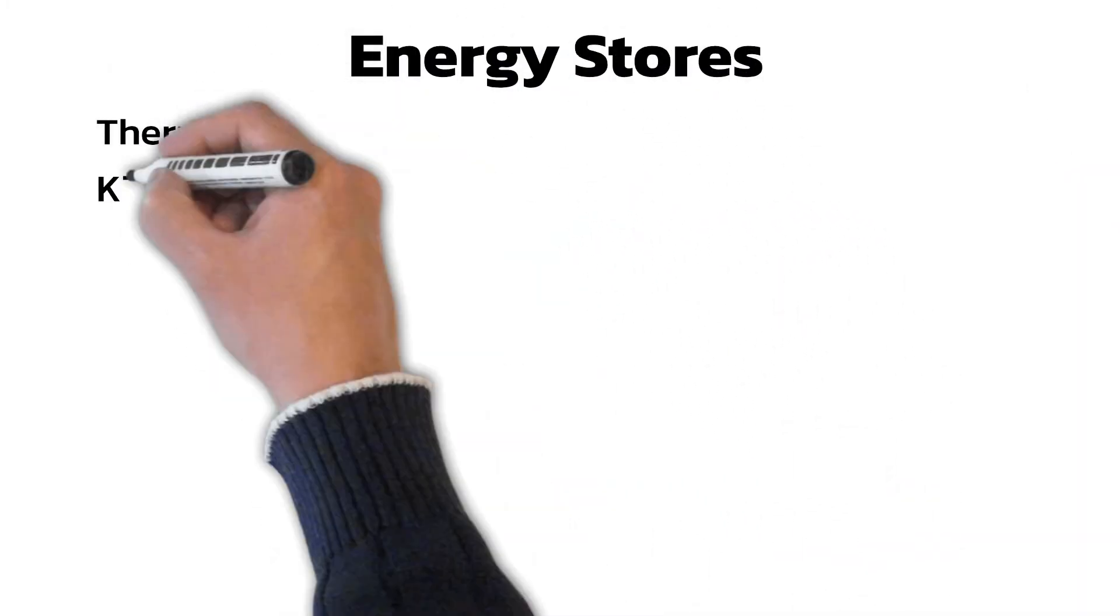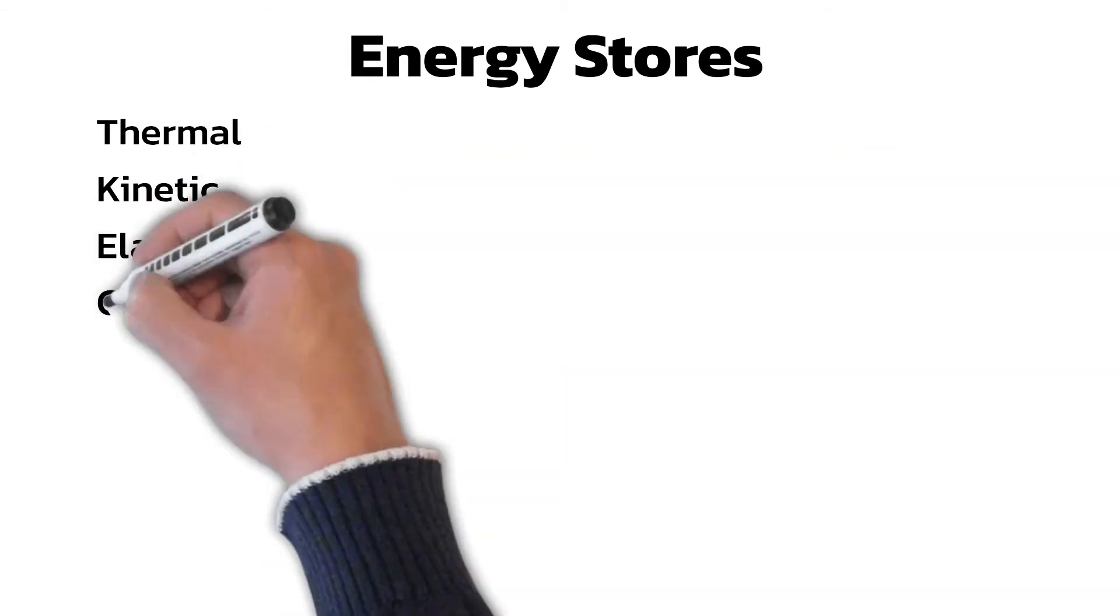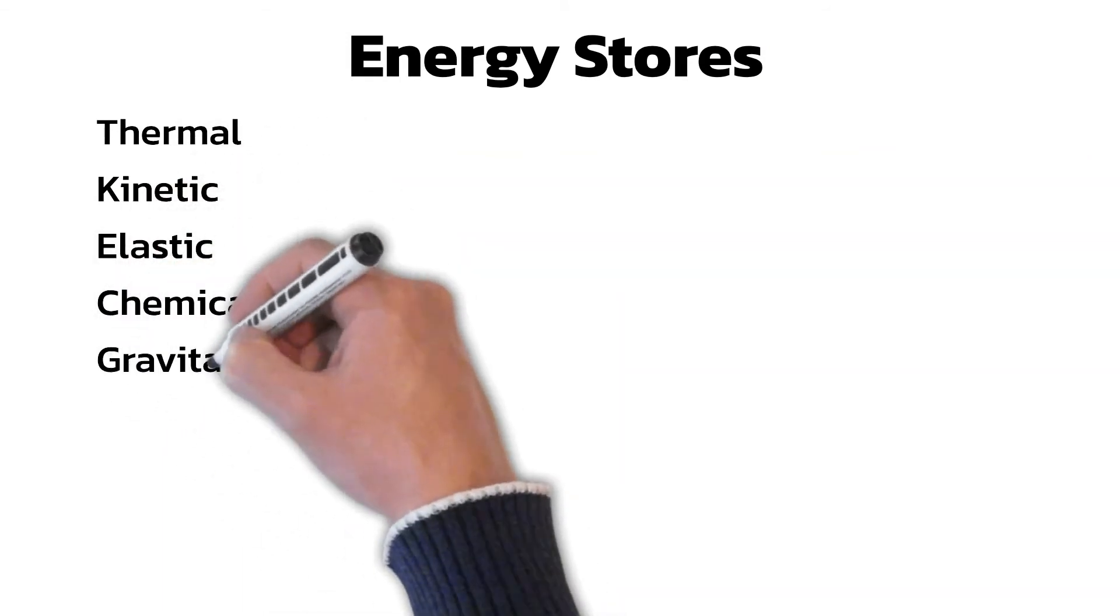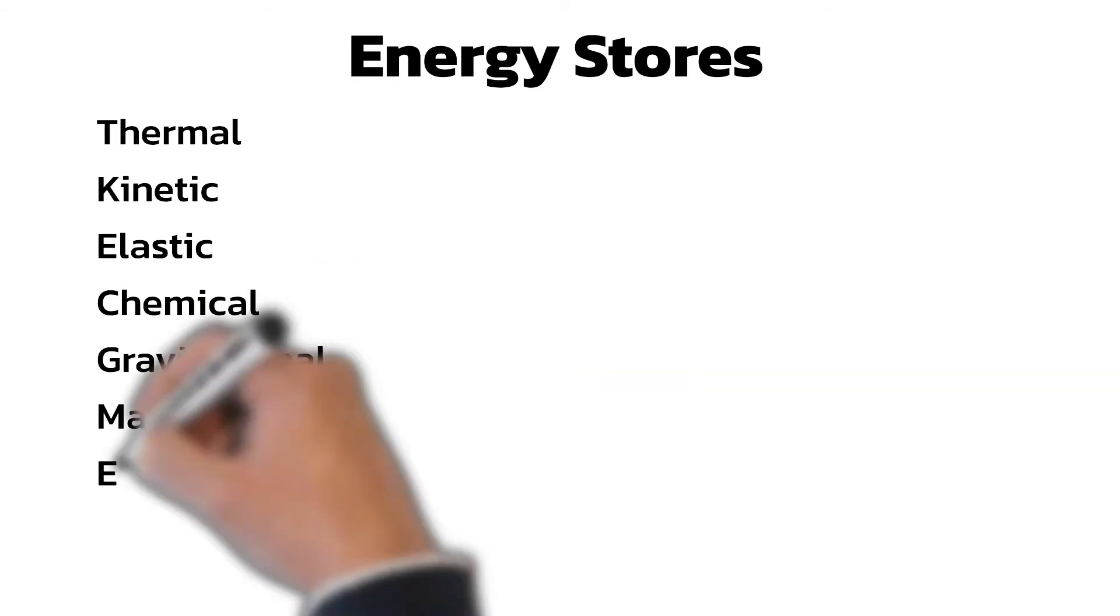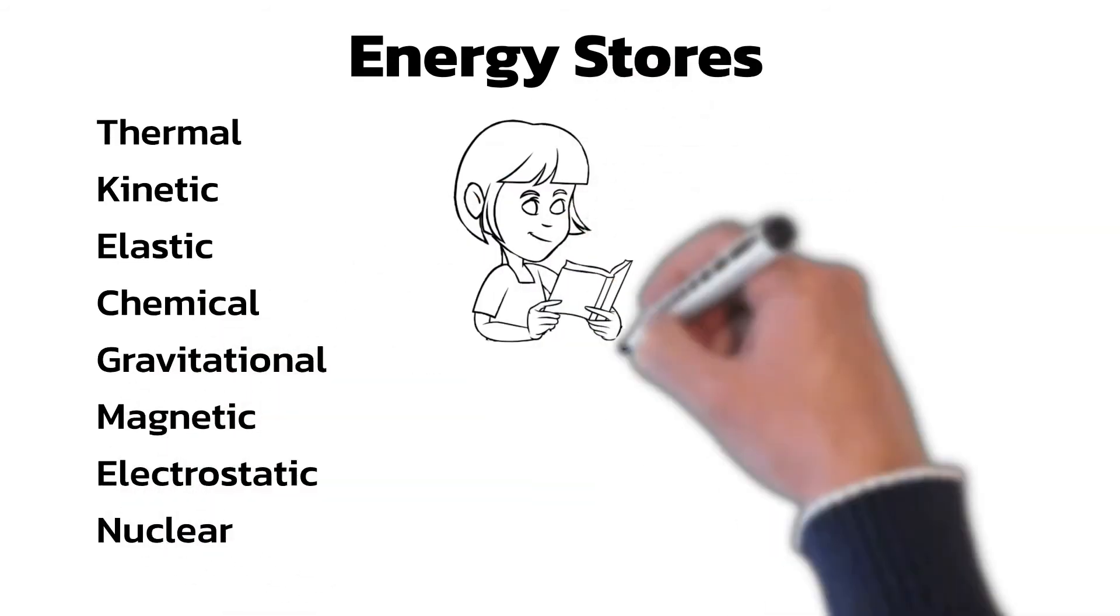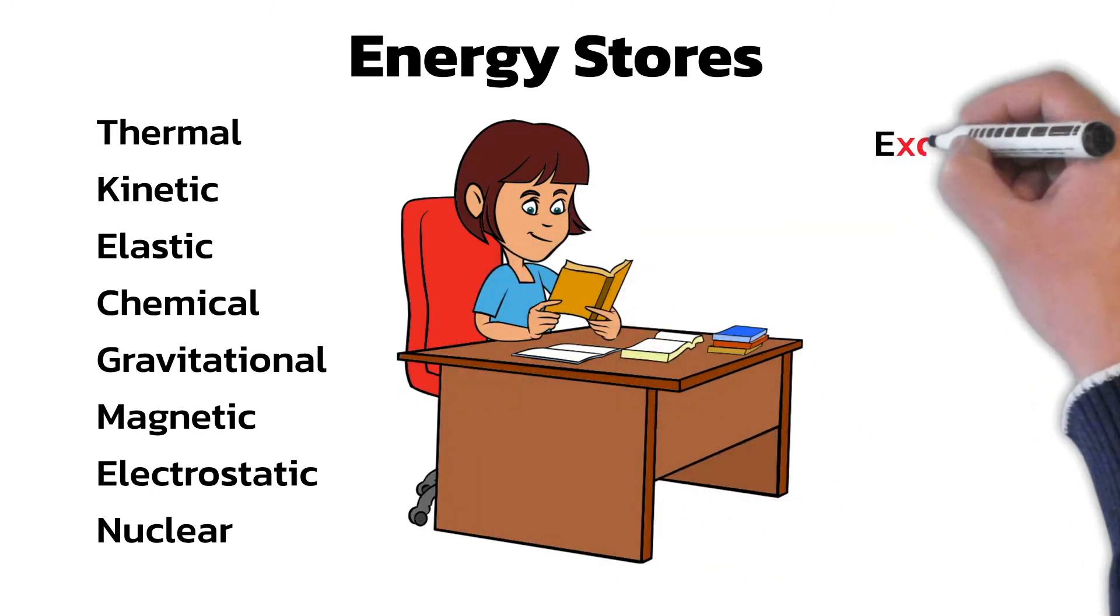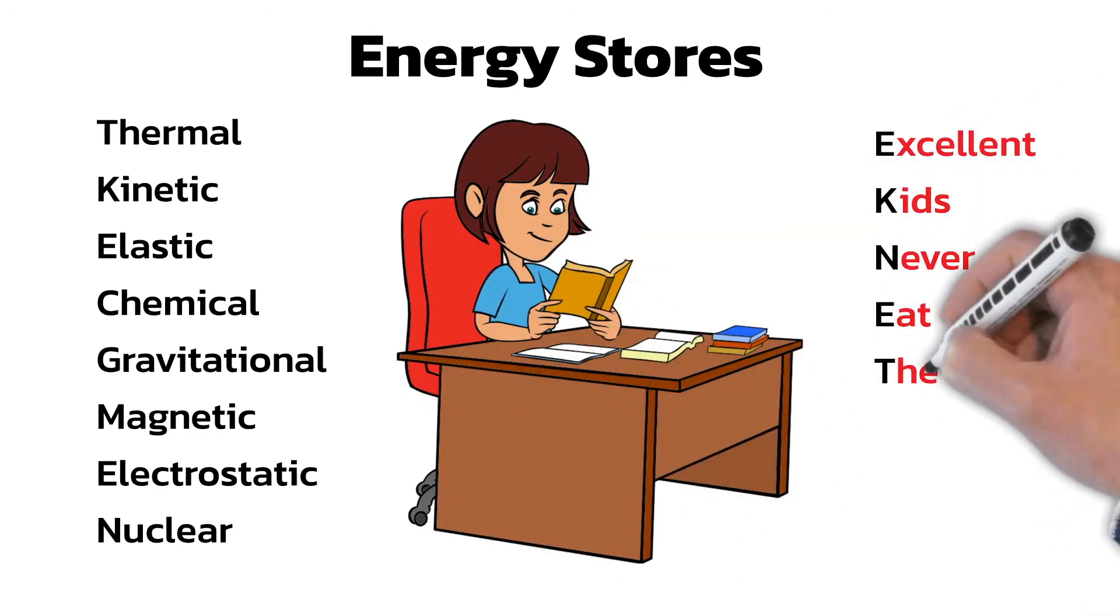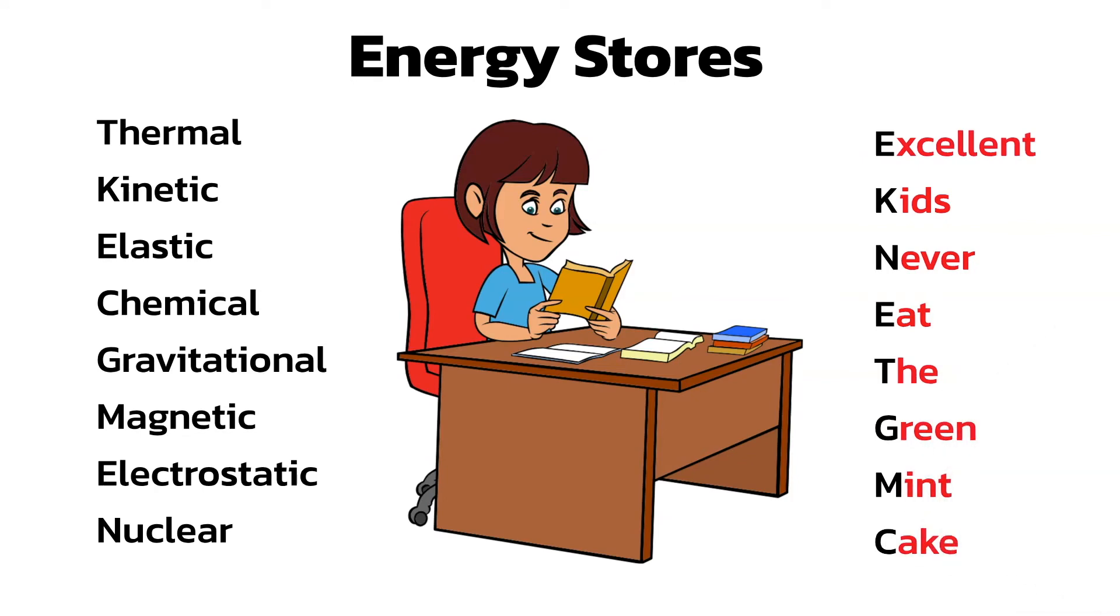So the eight energy stores are Thermal, Kinetic, Elastic, Chemical, Gravitational, Magnetic, Electrostatic, and Nuclear. These can be easier to remember using a sentence like this. Each word starts with the letter of one of the stores of energy. Try to come up with one of your own. If you do, please share it in the comments below.